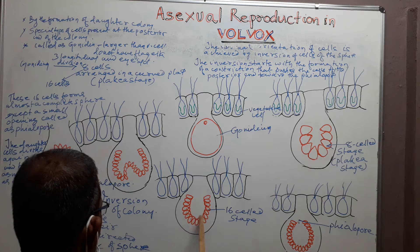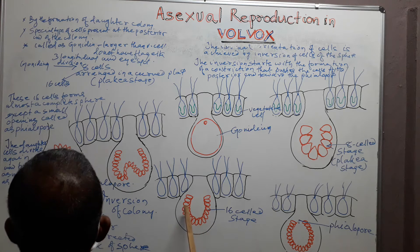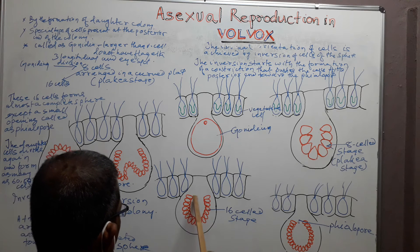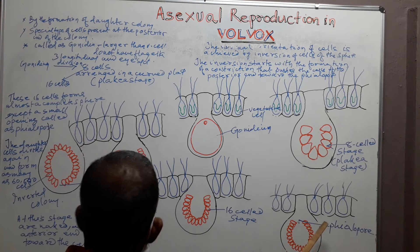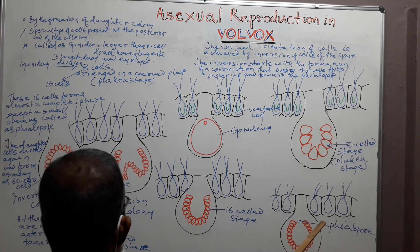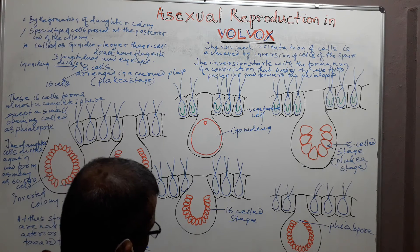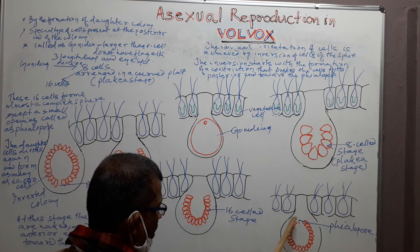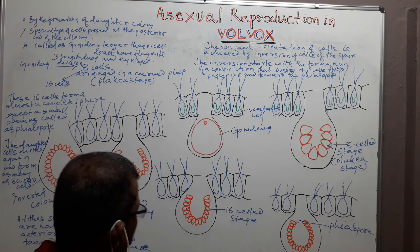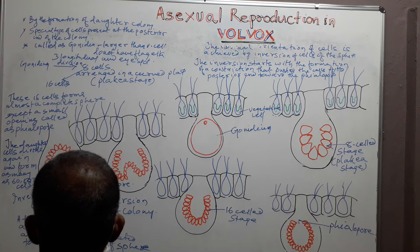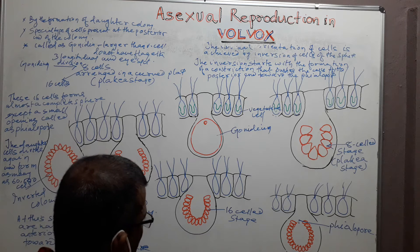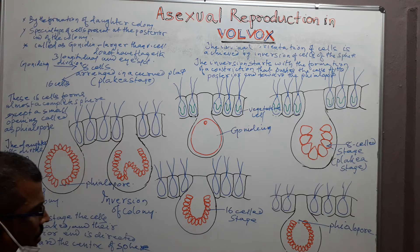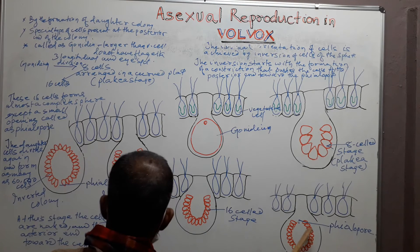The sixteen daughter cells form almost a complete sphere that has a narrow opening known as the phialopore. The daughter cells present in the sphere can divide again to form as many as sixteen thousand daughter cells. At this stage,